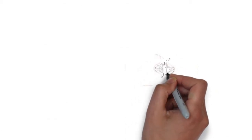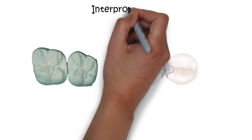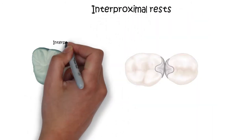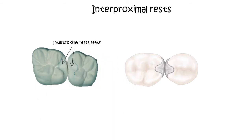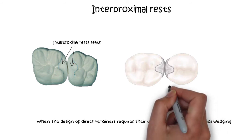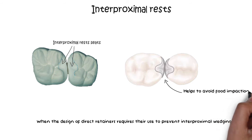Another type of occlusal rest known as the interproximal rest may be used instead of the usual occlusal rests. These interproximal type of rest are usually indicated when the design of direct retainers or the clasp assembly requires the use of interproximal rest in order to prevent the interproximal wedging by the denture. The joint design of these rests also helps in keeping the food away from the contact points hence eliminating or minimizing the food traps in the interproximal spaces.